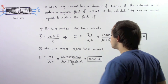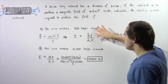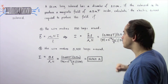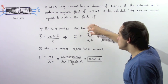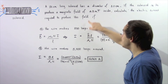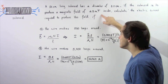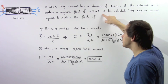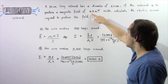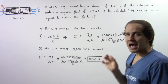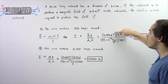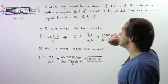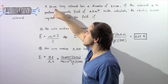So I equals BL divided by mu naught times N. Our B is 0.8 milliteslas, which we convert to teslas by dividing by 1000. L is given as 50 centimeters, which we convert to meters by dividing by 100, giving us 0.5 meters.